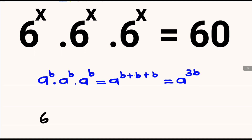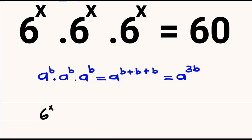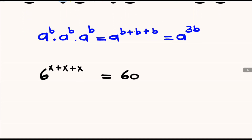So in the same token, we will have 6 raised to the power x plus x plus x, and this will be equal to 60 on the right hand side. We have 6 raised to the power x plus x plus x, which is equal to 3x, and this will be equal to 60.